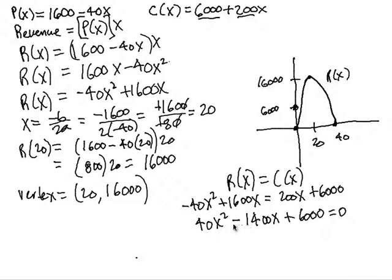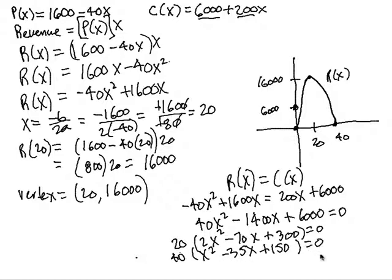Now we can factor a 20 out of everything. And we'll have 20 times 2x squared minus 70x plus 300 equals 0. And it turns out that we could take the other two out also. So we'll have 40 times x squared minus 35x plus 150 equals 0.